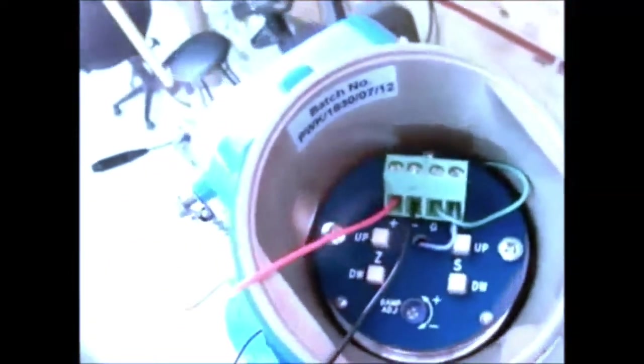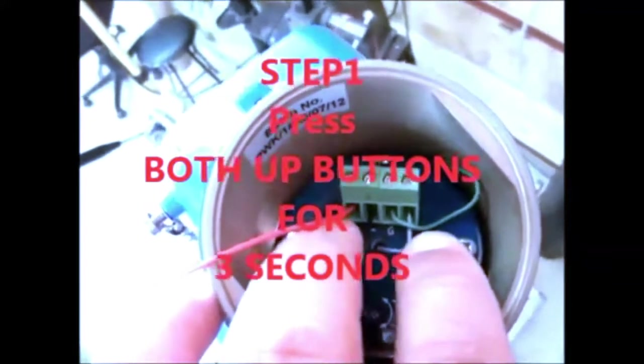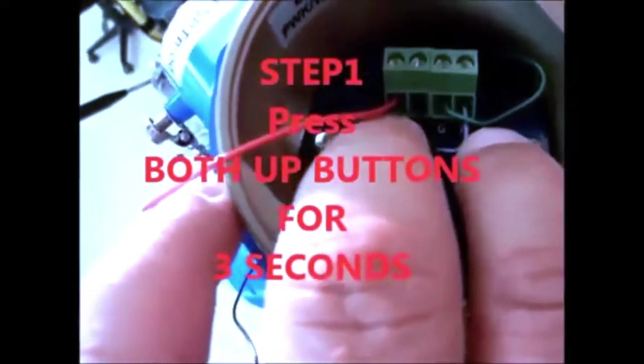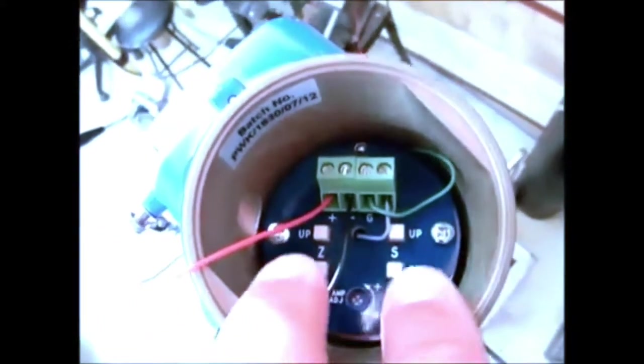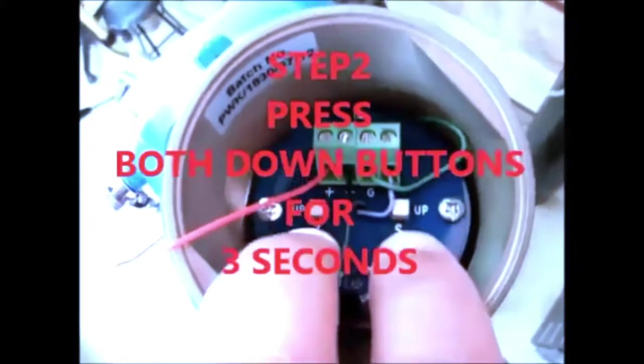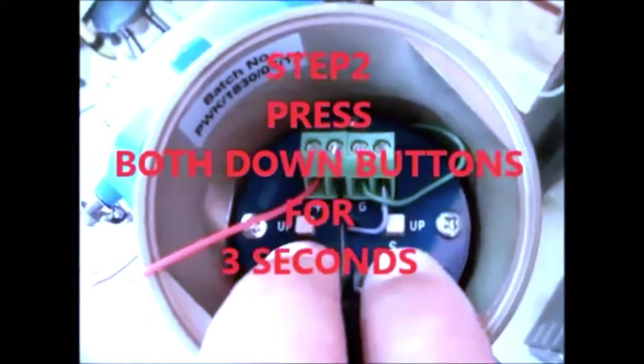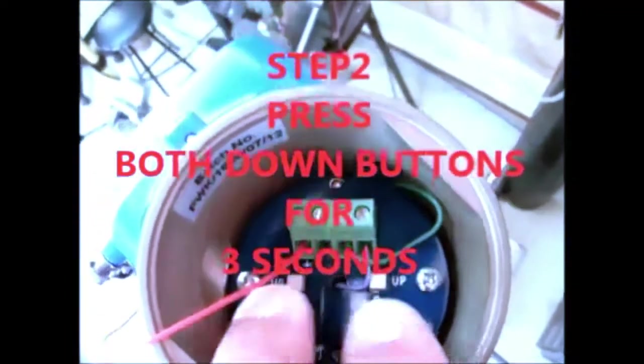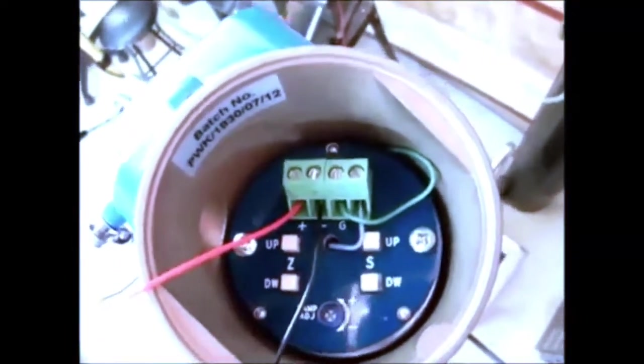Our first step is to press the up buttons both at the same time for three seconds—one, two, three, and you let go. And then the down buttons for three seconds—one, two, three—and this puts it into calibration mode.